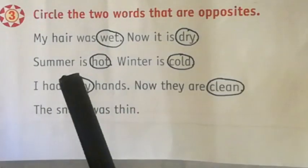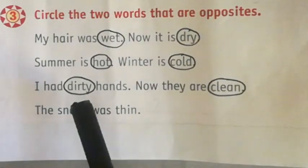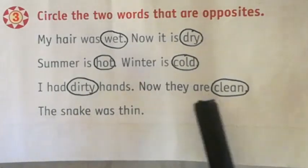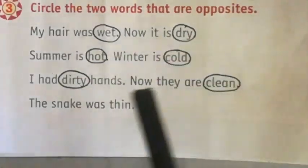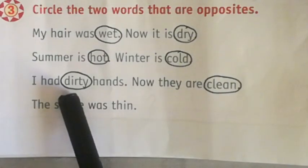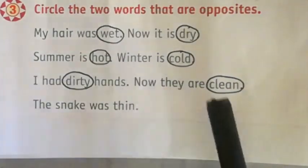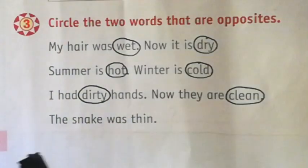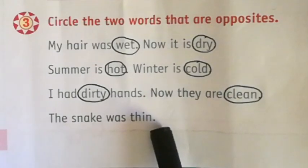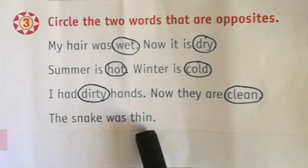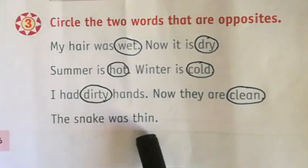I had dirty hands, now they are clean — dirty and clean are opposites, so circle dirty and clean. The snake was thin — in this line the word is thin but no opposite of thin is given, so we circle none. In today's lecture you have learned about word opposites. Practice this page at home. I will see you in the next video.